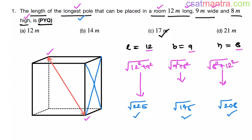Now, how many face diagonals can a cuboid have? There are 6 faces, and on each face you have 2 diagonals, so 6 × 2 = 12 face diagonals. Also note that opposite face diagonals are equal in length because their corresponding sides are the same.